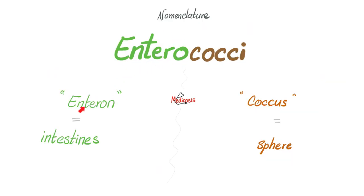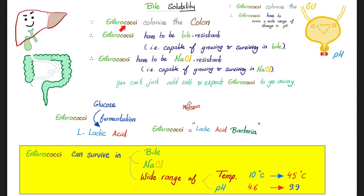Entero means intestines and coccus means a sphere — spherical bacteria that colonize your colon. Since the Enterococcus colonizes the colon, they have to be able to survive in your intestine. They have to be bile resistant, because otherwise the bile is going to kill them and they will not survive in your intestine for a second. But they can resist the bile — they are capable of growing, surviving, and multiplying in bile.